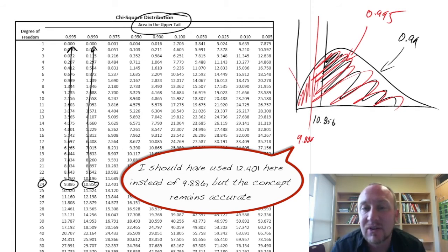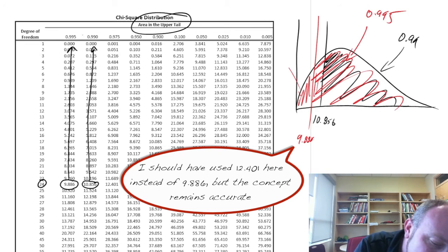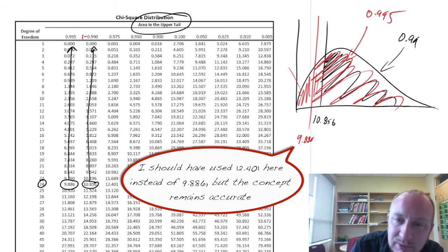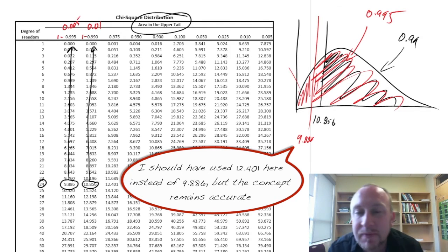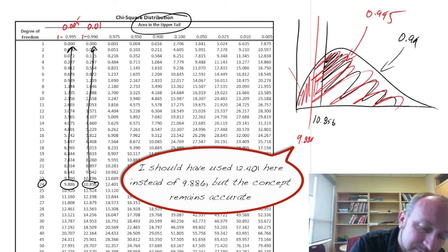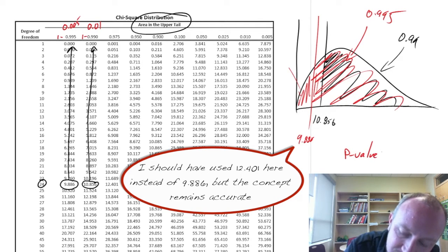And so in order to get that value we need to calculate 1 minus 0.99. So that would be 0.01. And 1 minus 0.99. That would be 0.005. Those now are our two relevant probabilities. Again because this is a two-tail test. In order to obtain our p-value we would need to then multiply those two values by 2.